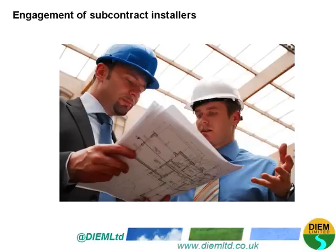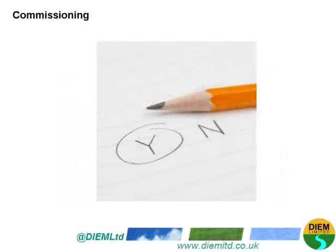Any subcontractors an installer wishes to use must comply with all the requirements of PAS 2030. The installer shall retain responsibility for compliance with all requirements of the PAS for work carried out by the subcontractor — responsibility does not pass to the subcontractor; it stays with the main installer. Where not otherwise covered by a measure-specific requirement, it shall be the responsibility of the installer for commissioning. Commissioning must be to the manufacturer's instructions and design specifications and in conformance with any relevant statutory regulations. A record will be made of the commissioning actions undertaken and any performance measurement results recorded.